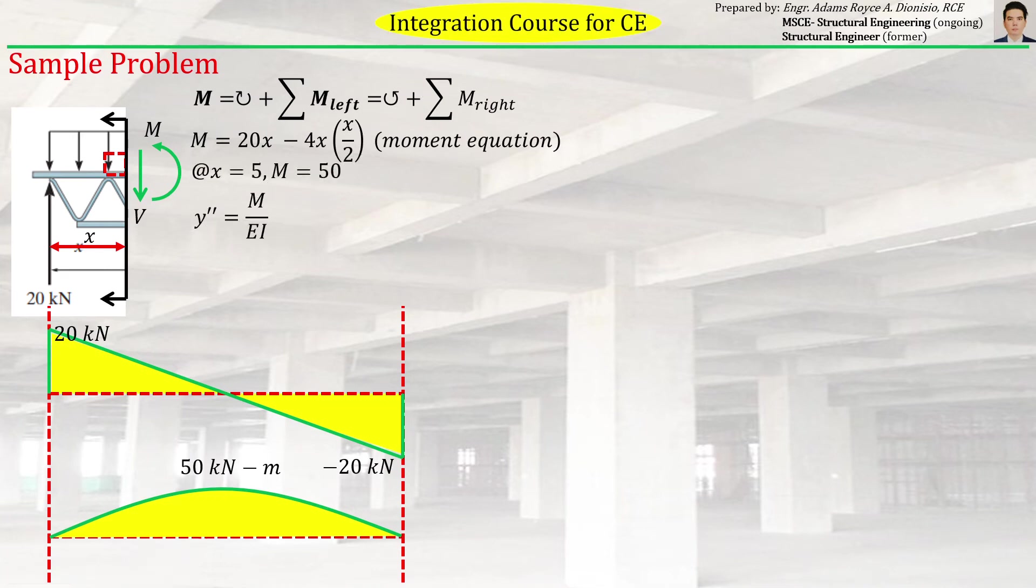Just to verify the moment equation, let's try to substitute x = 5, which is the midspan. If you substitute 5 here, the corresponding M will be 50 kilonewton-meters, which is correct if you look at the bending moment diagram. So we know the equation we obtained is correct.